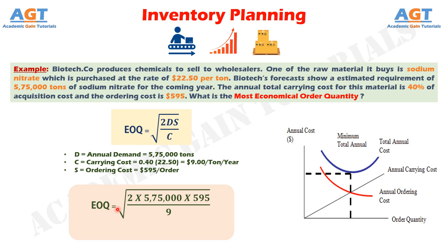Putting all values into the equation: EOQ equals the square root of 2 multiplied by 575,000 tonnes multiplied by $595 per order, divided by $9 per tonne per year, which gives an Economic Order Quantity of approximately 27,573.135 tonnes per order. This means that placing an order of 27,573.135 tonnes of sodium nitrate per order will minimize inventory costs such as holding costs, shortage costs, and order costs, making it the most economic decision for Biotech Corporation.